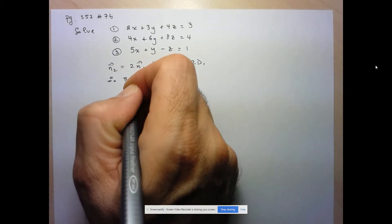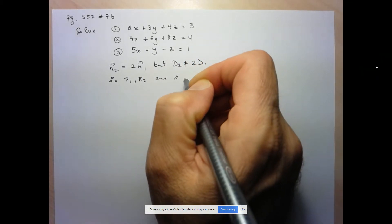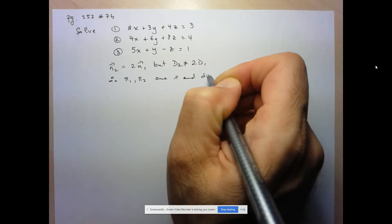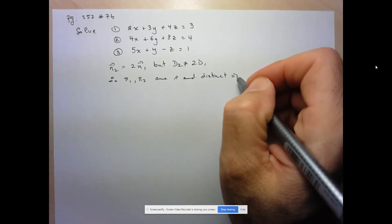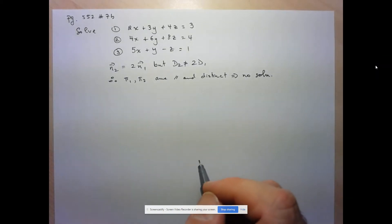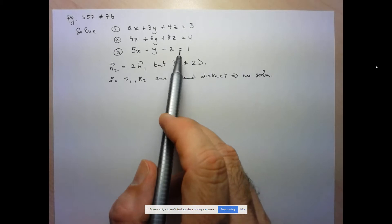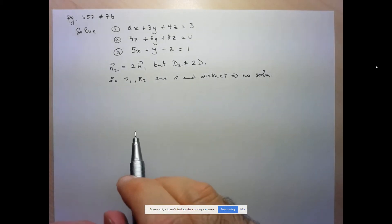It tells us that plane 1 and plane 2 are parallel and distinct. So right off the bat, we can say that there's no solution to this system of equations. Because even without considering the third plane, these two planes have no points of intersection.